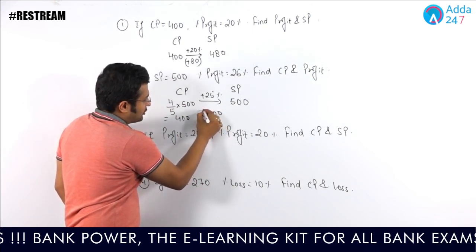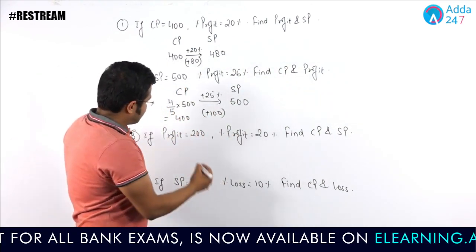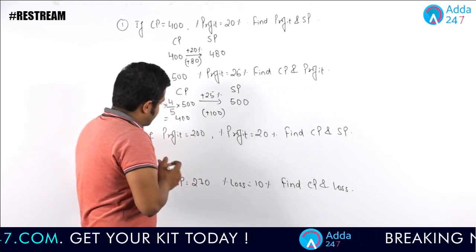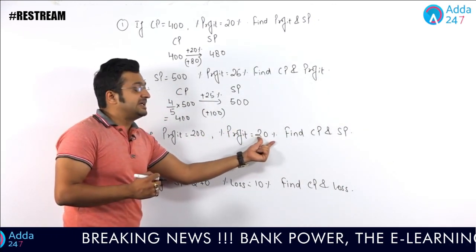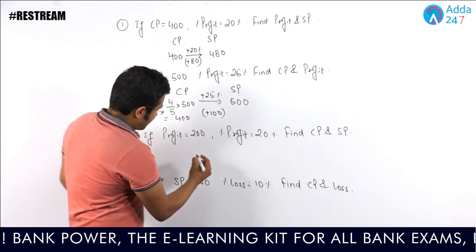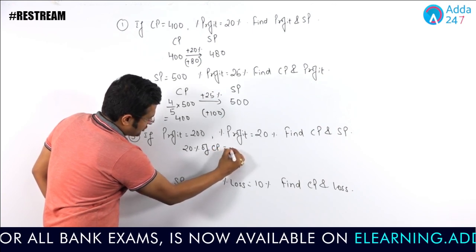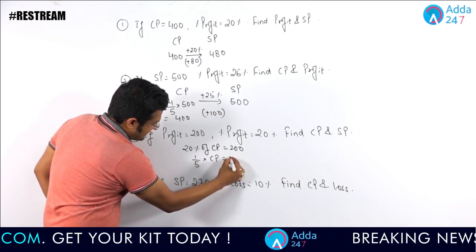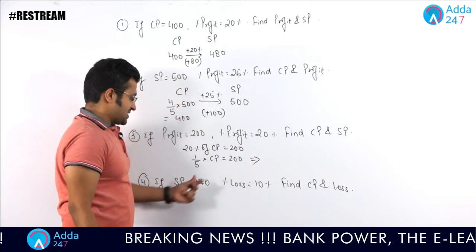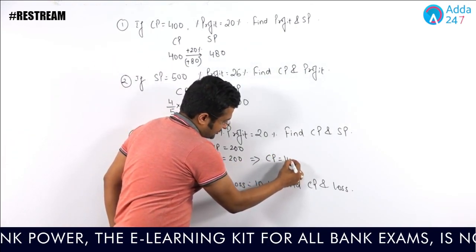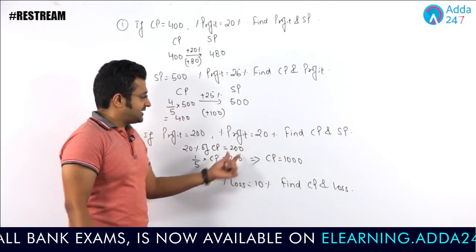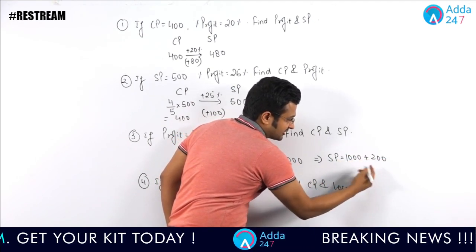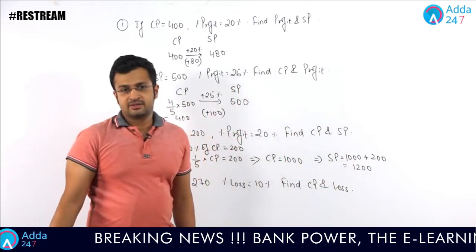Third question: profit is 200 rupees and percentage profit is 20% — find cost price and selling price. We know 200 is the profit, which is 20% of CP. Since 20% is 1/5, we have 1/5 of CP = 200, so CP = 200 × 5 = 1000. Since there is a profit, SP = CP + profit = 1000 + 200 = 1200.